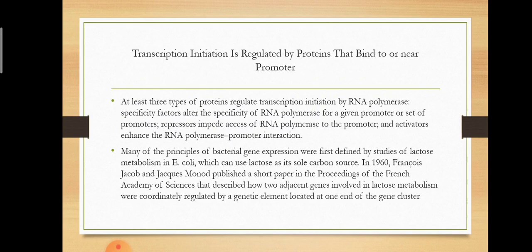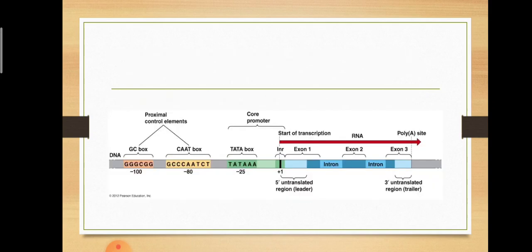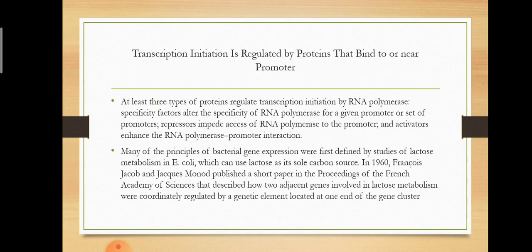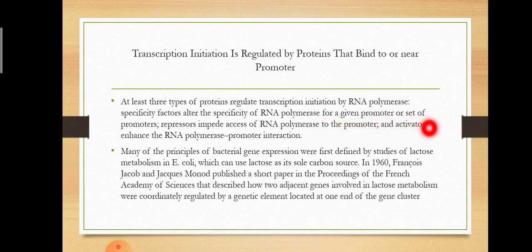Transcription initiation is regulated by proteins that bind to or near the promoter. Near the promoter region, there are various binding sequences that act as controllers. At least three types of proteins regulate transcription initiation by RNA polymerase: specificity factors alter the specificity of RNA polymerase for a given promoter or set of promoters; repressors impair access of RNA polymerase to the promoter; and activators enhance the RNA polymerase–promoter interaction.